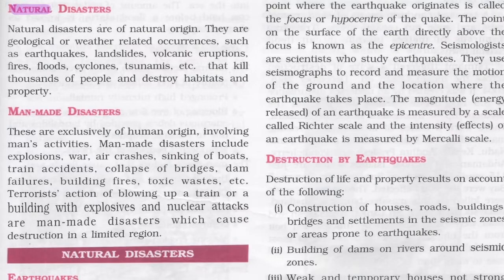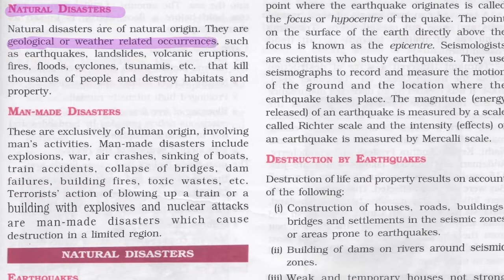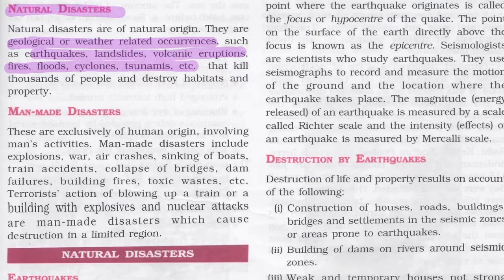Natural disasters are of natural origin. They are zoological or weather-related occurrences like earthquakes, landslides, volcanic eruptions, fires, floods, cyclones, and tsunamis. Natural disasters kill thousands of people and destroy their habitats as well as their property.